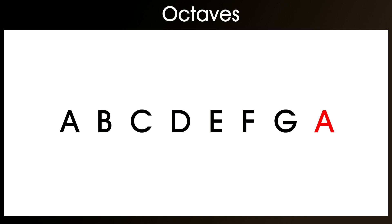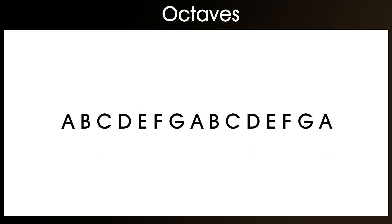For example, we have here the A and the A, and that is the octave. You'll notice that there are actually eight notes between the two A's, and this is where the word octave comes from, because 'oct' means eight — as in octopus and octagon. So the octave is where the note repeats eight notes up or eight notes down.